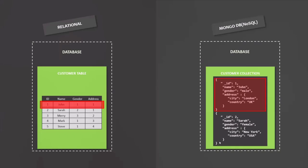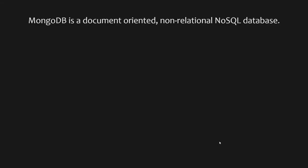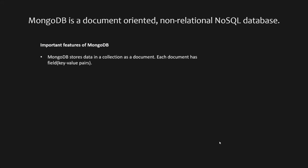Now let's look at some important features of MongoDB. From what we have learned, MongoDB is a document-oriented, non-relational NoSQL database solution. MongoDB stores each data entity in the form of a document — it is a document-oriented database solution. In a document, data is stored as a JSON object with fields, where each field is a key-value pair. That's why MongoDB is a NoSQL database — because data is not stored in a table but in JSON format.